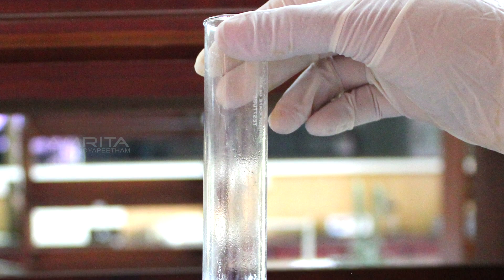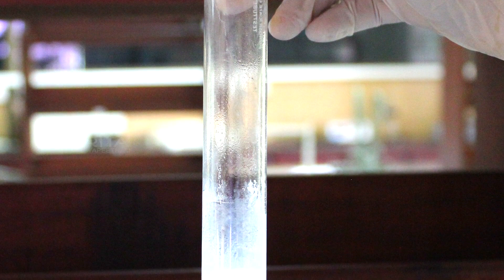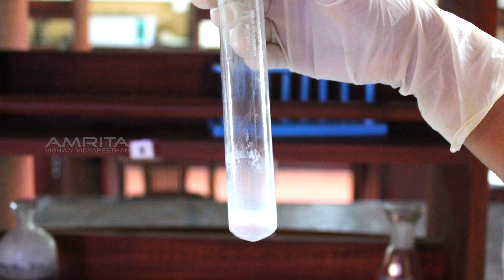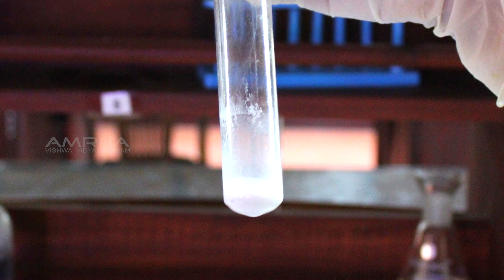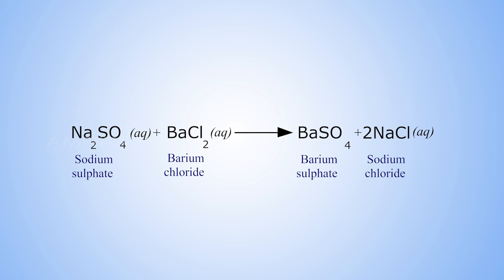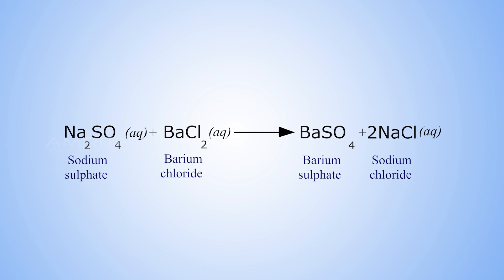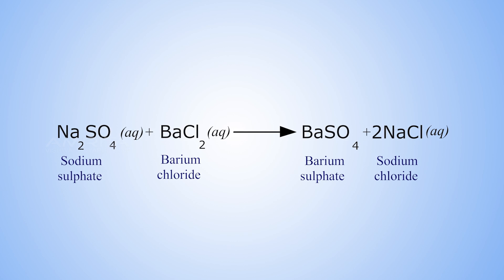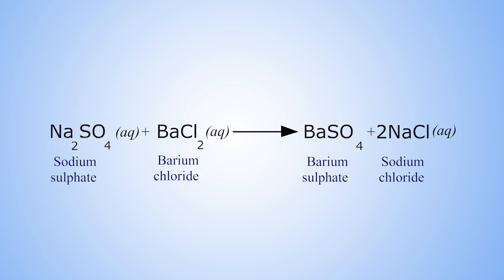A chemical reaction occurs between Sodium Sulphate and Barium Chloride to form Barium Sulphate and Sodium Chloride. This is a double displacement reaction in which Sulphate ions are displaced by Chloride ions and Chloride ions are displaced by Sulphate ions.